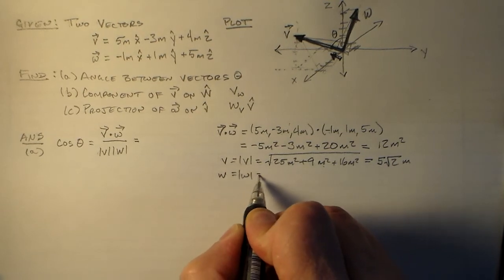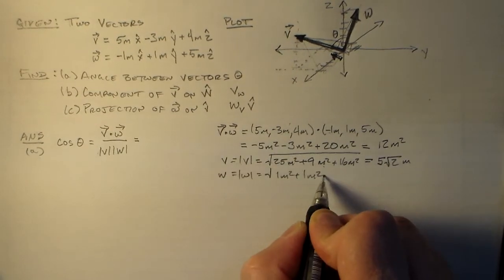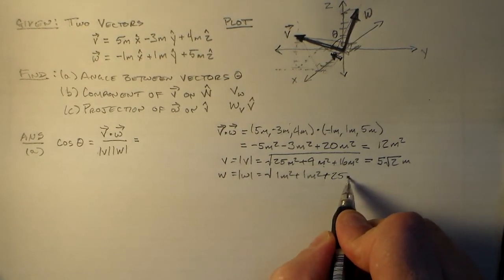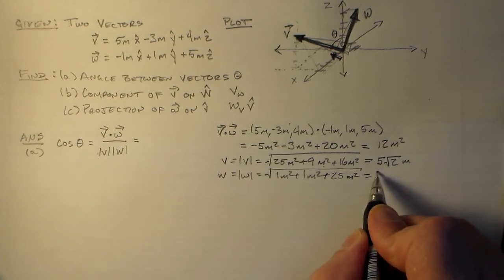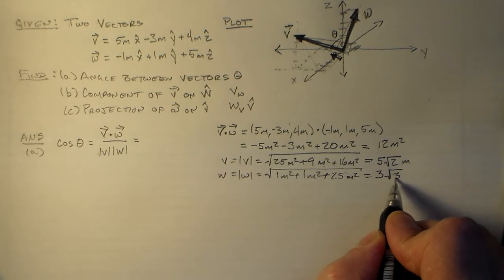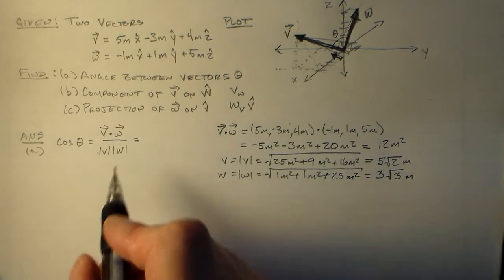And w, we do the same thing for, that's 1 square meter plus 1 square meter plus 5 times 5 is 25 square meters. And that ends up being 27, which is 9 times 3, so we have 3 times the square root of 3 meters. So those are the things we have to work with in this case.